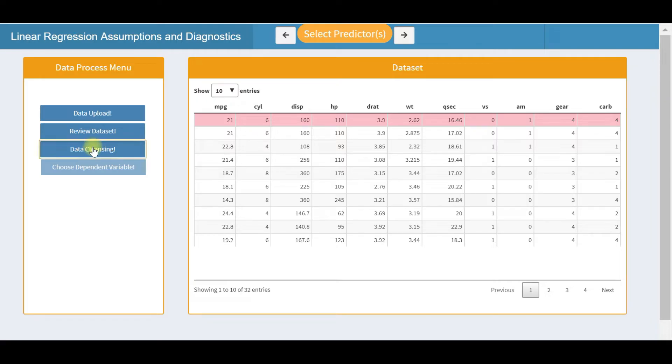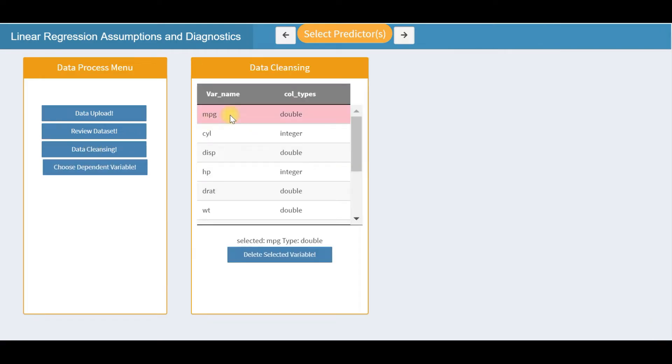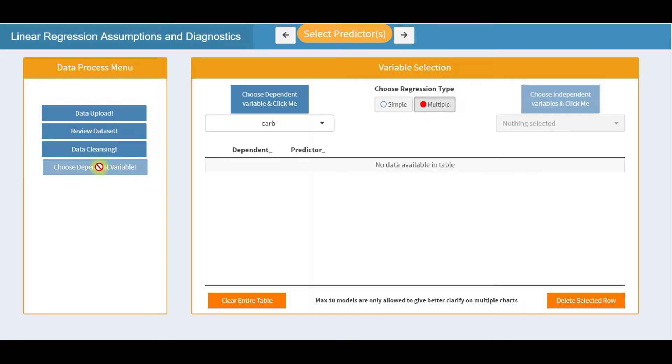Next, you have the option to delete unwanted columns in the dataset, for example ID. Fortunately we don't have anything like that in this dataset.